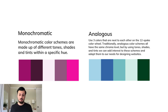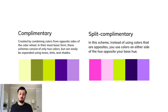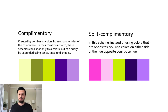Monochromatic color schemes are made up of different tones, shades, and tints within a specific hue — in this case a purplish pink. Analogous uses three colors next to each other on the 12-spoke color wheel. Traditionally, analogous schemes have the same chroma level, but by using tones, shades, and tints, we add interest and adapt them for UI design. Complementary is created by combining colors from opposite sides of the color wheel — in their basic form just two colors, like a yellow and purple, but expandable using tones and tints. Split complementary uses colors on either side of the hue opposite your base hue — for example, a pink, a purple, and a green.